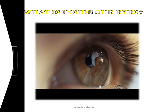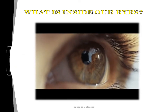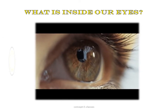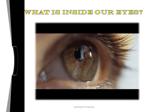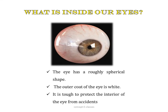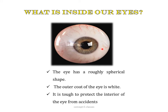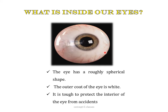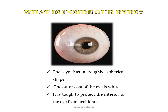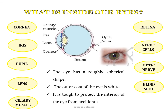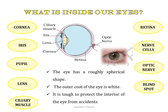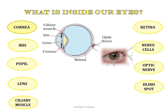We see things only when light coming from them enters our eyes. The eye is one of our most important sense organs, so it is important to understand its structure and working. The eye has a roughly spherical shape. Its outer coating is white and tough to protect the interior from accidents. The different parts of the eye are: cornea, iris, pupil, lens, ciliary muscles, retina, nerve cells, optic nerve, and blind spot.